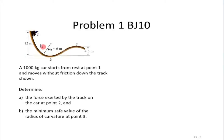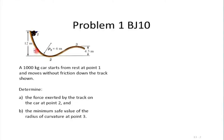The force exerted by the track at point 2 is straightforward. We apply the principle of conservation of energy. Kinetic energy is 0 at the start — take this as the datum — so the gravitational potential energy is m*g*h, or m*g into 12.